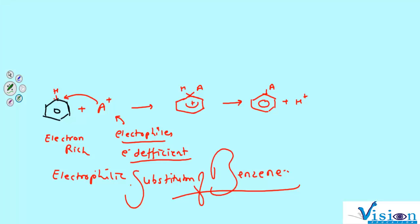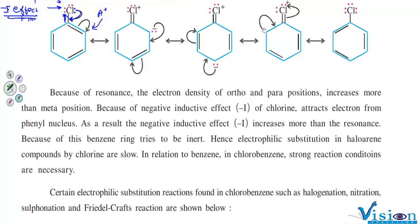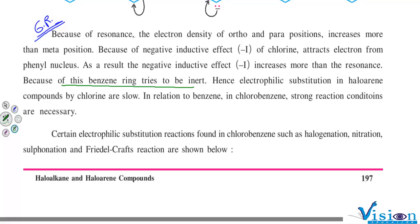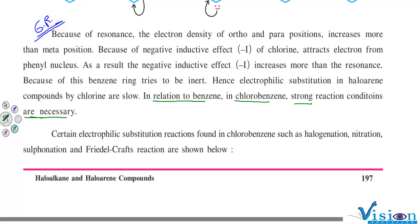The benzene ring tries to be inert — the reaction does not occur as easily as in benzene. Hence, the electrophilic substitution reaction in haloarene compounds is slow relative to benzene. In chlorobenzene, stronger reaction conditions are required.